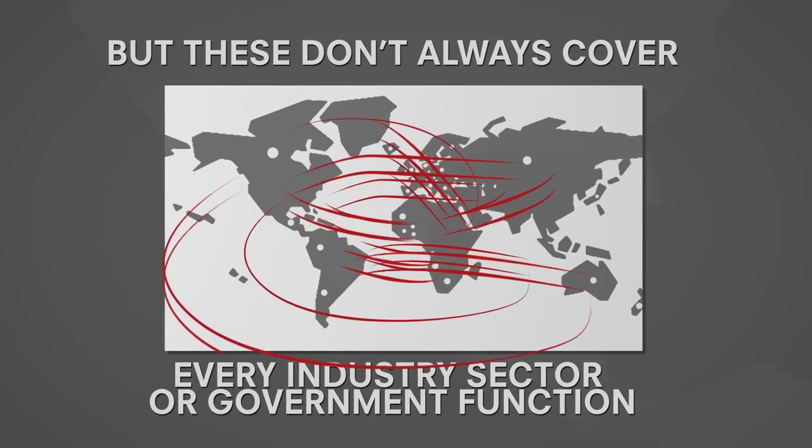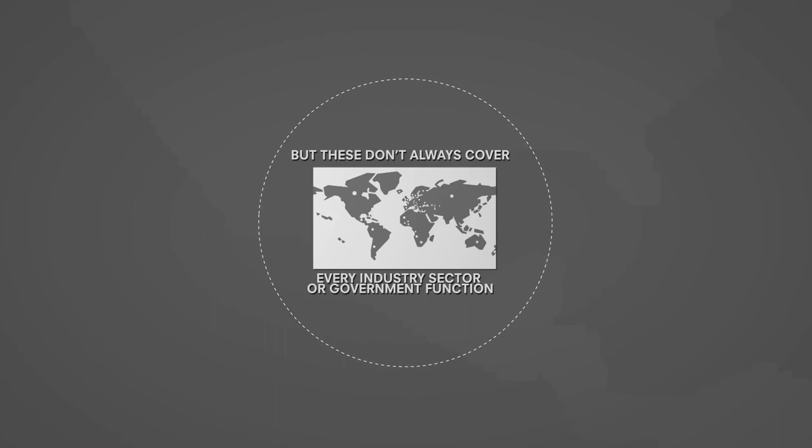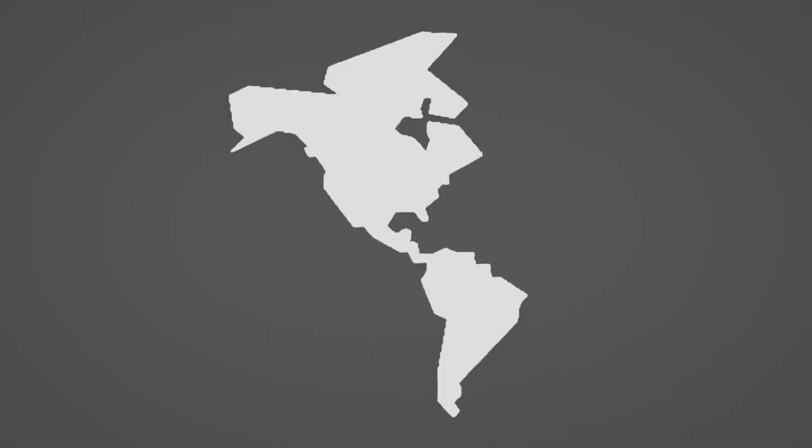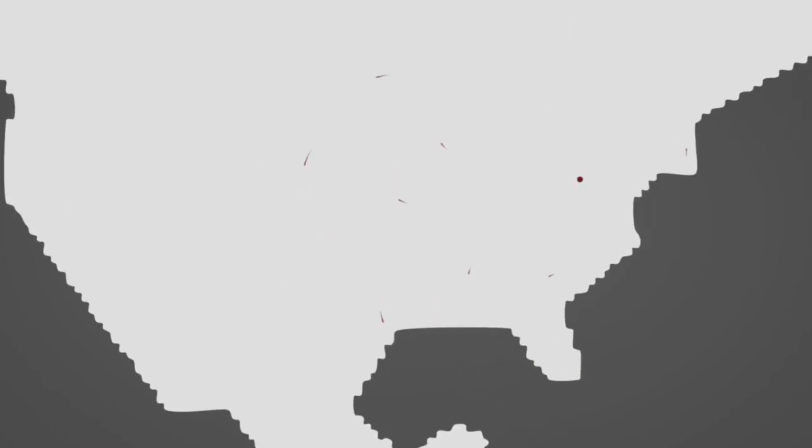And, because information travels around the world through borderless networks, even if you live somewhere where your data is protected, it will likely end up in countries that have different laws, or none at all, which means you have no remedies if your rights are abused.